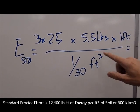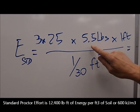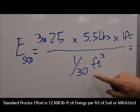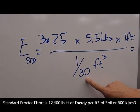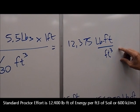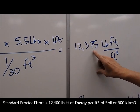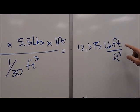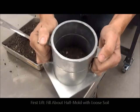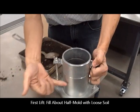So if we do this calculation, 3 times 25 times 5 1/2 times 1 in units of pound-foot, and then we divide that by 1 over 30, the resulting number is an energy of 12,375 pound-foot of energy per cubic foot.